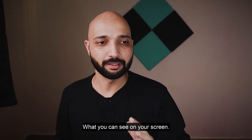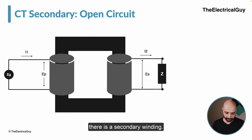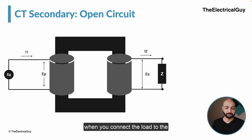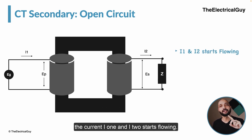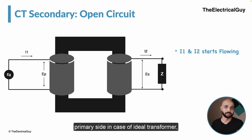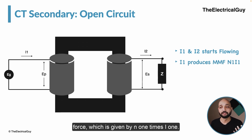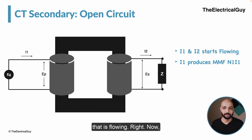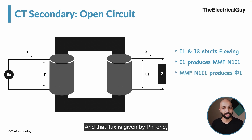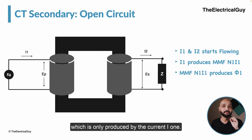The construction of a current transformer and the regular power transformer is a bit different, but for understanding we'll proceed with the regular transformer. We have a supply Eg, a primary winding, a secondary winding, and we have connected load Z to the secondary winding. When you connect the load, current i1 and i2 start flowing. When i1 is flowing, it produces its own magnetomotive force given by N1 times i1, where N1 is the number of primary turns.